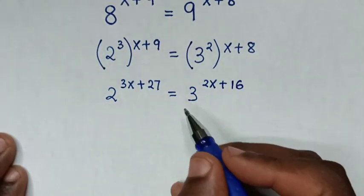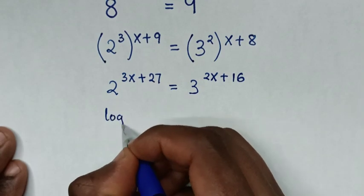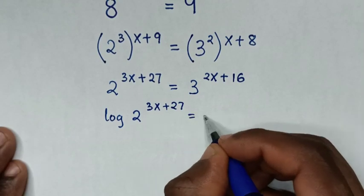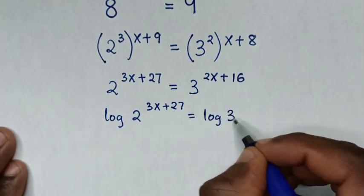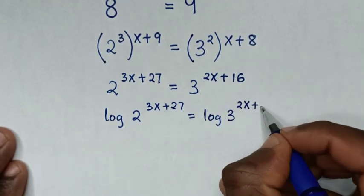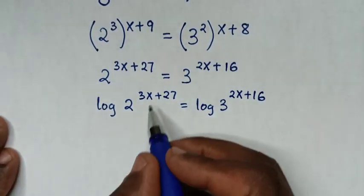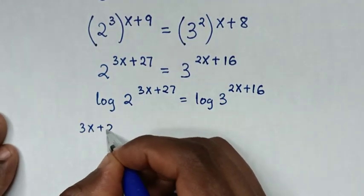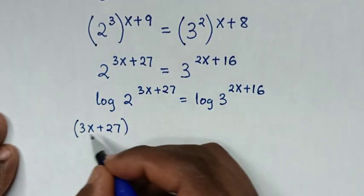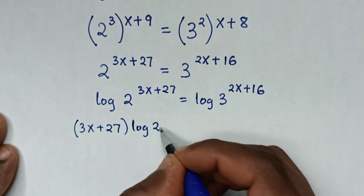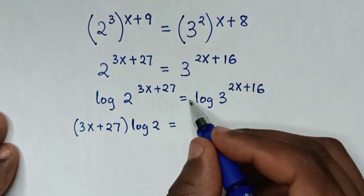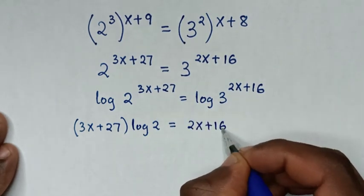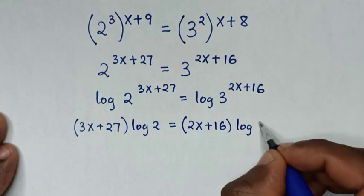Then we will apply log on both sides. So it will be log of 2 power of 3x plus 27 is equal to log of 3 power of 2x plus 16. Then this power will move to the base, so it will be (3x plus 27) times log of 2 is equal to (2x plus 16) times log of 3.